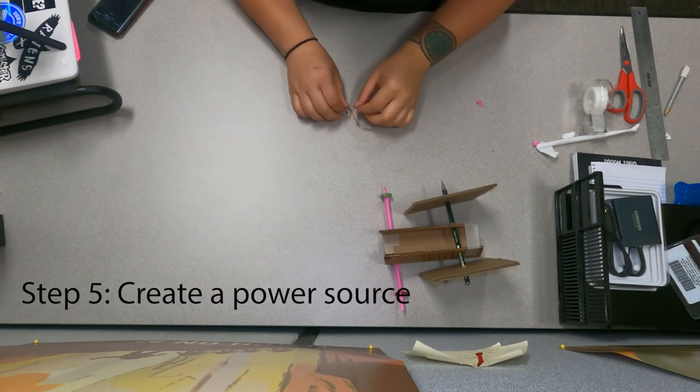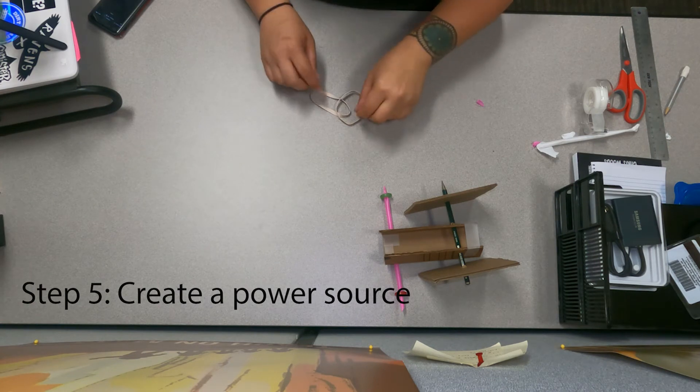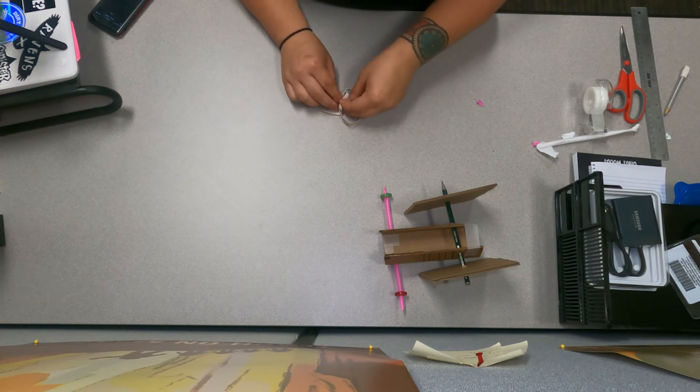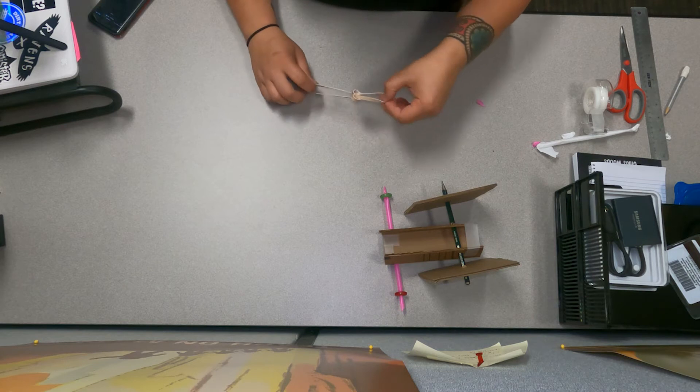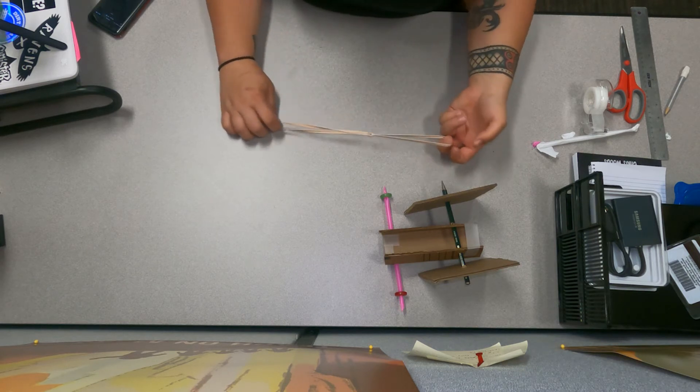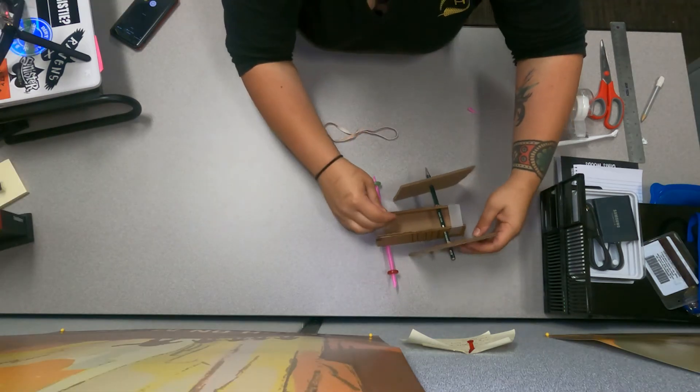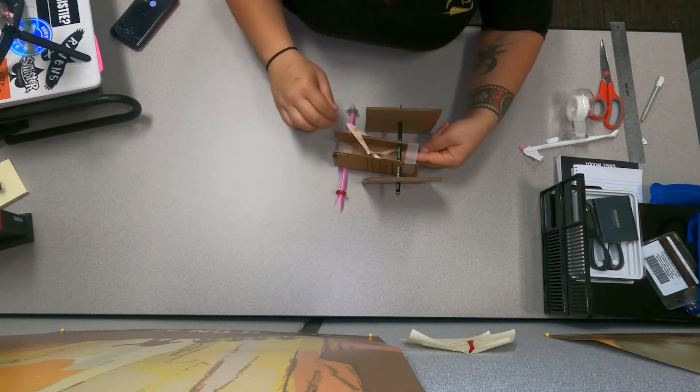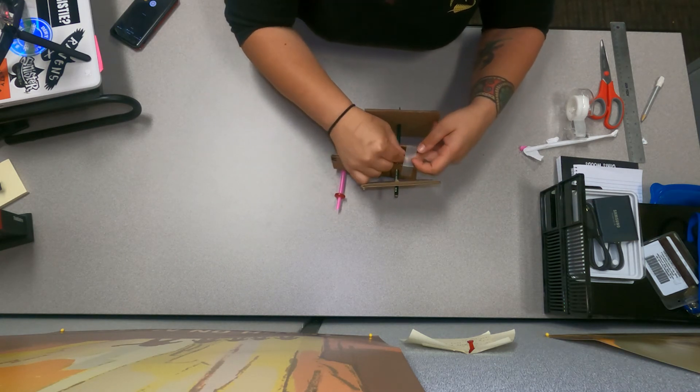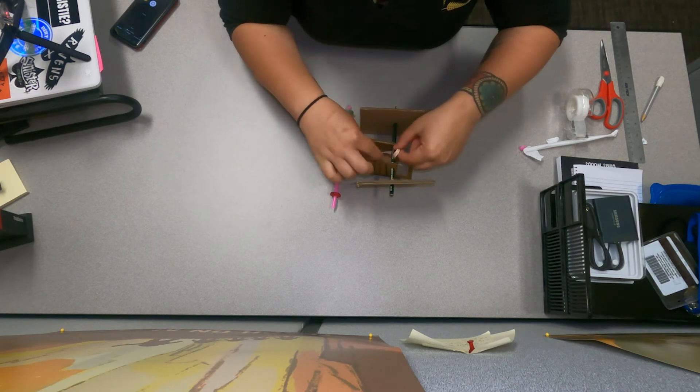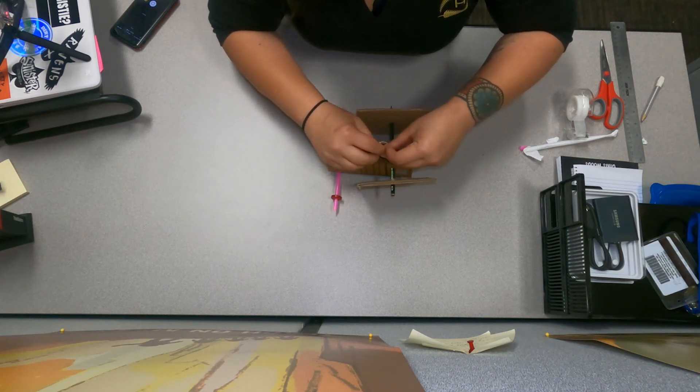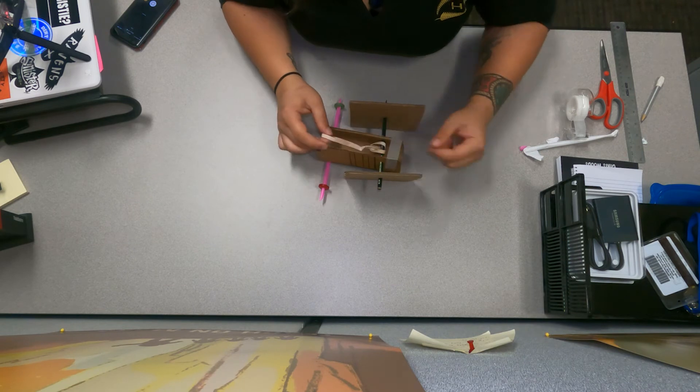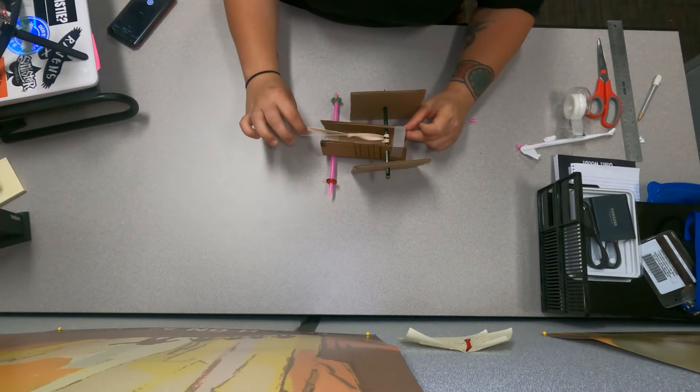Step five, we're going to create the power source. We're going to do a little rubber band chain by creating a little knot in between the two. And then you're going to attach the rubber band to the back axle by wrapping it around, doing another little knot, kind of like how you attach the two rubber bands to each other.